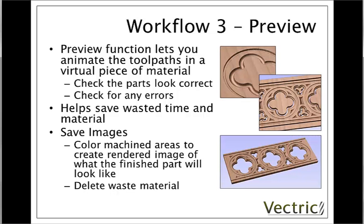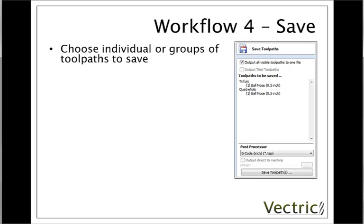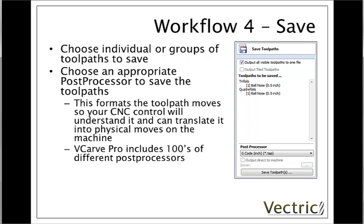At that stage you are ready to move on to the saving stage. Here we'll take our toolpaths and choose either individual ones or group them together — perhaps in groups where they share the same tool, or group them all together if we have an automatic tool changer — and tell the software how to format them for the machine. To do this we choose from a list of post processors. The post processor takes the toolpath moves and formats them so your CNC control will understand them and translate them into physical moves that will actually cut the part.